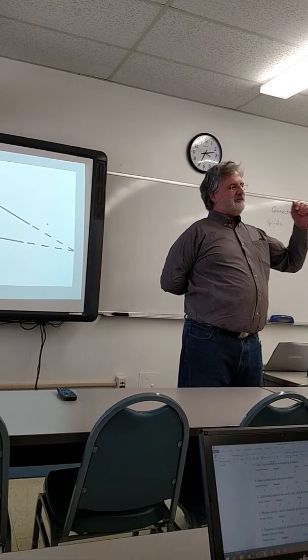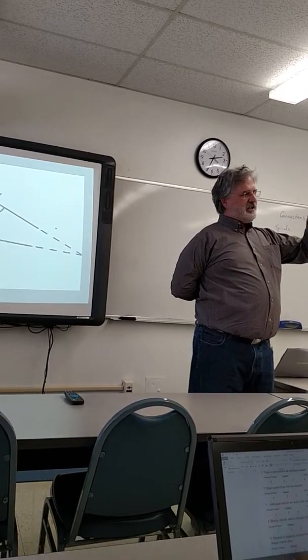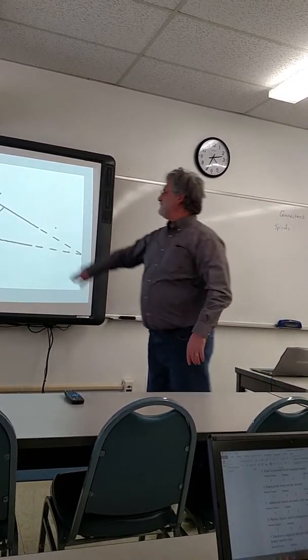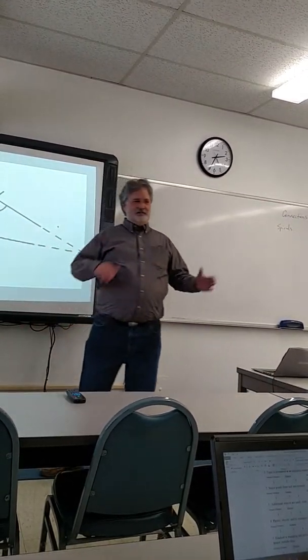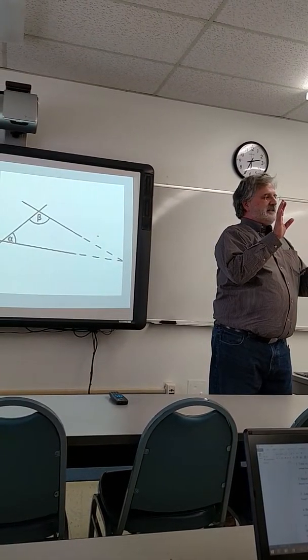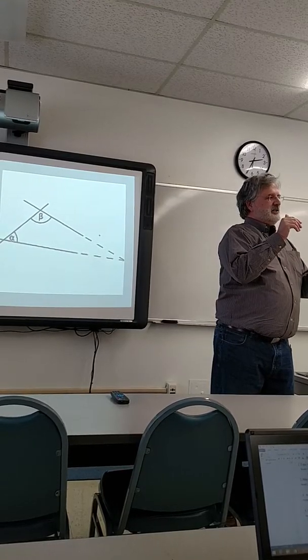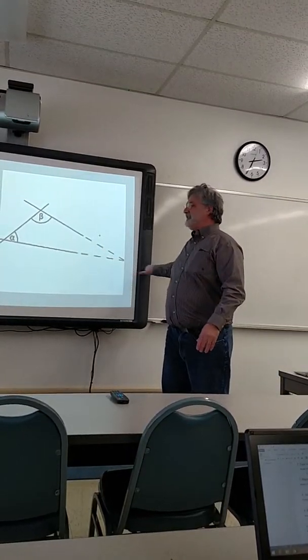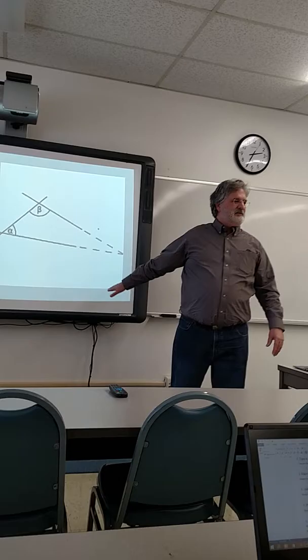It basically says that if you have a transverse line, we'll call this one the transverse line, if the two angles inside that transverse line on one side are less than 180, less than two right angles, the lines somewhere out in space are going to intersect.